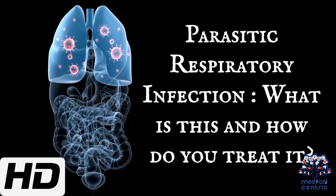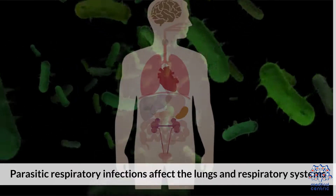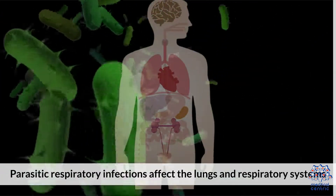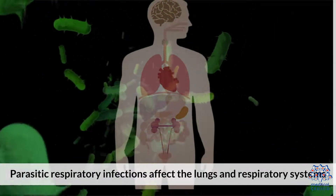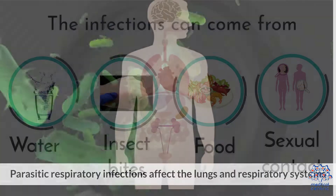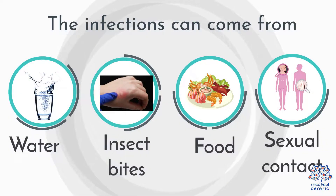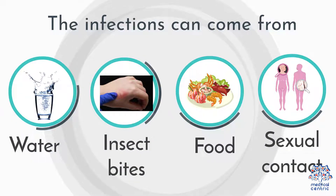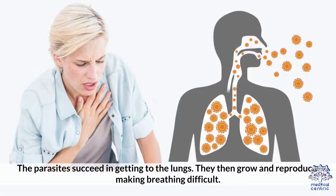Parasitic respiratory infection — what is this and how do you treat it? Parasitic respiratory infections affect the lungs and respiratory systems. The infections can come from water, insect bites, food, and sexual contact. The parasites succeed in getting to the lungs, where they grow and reproduce, making breathing difficult.